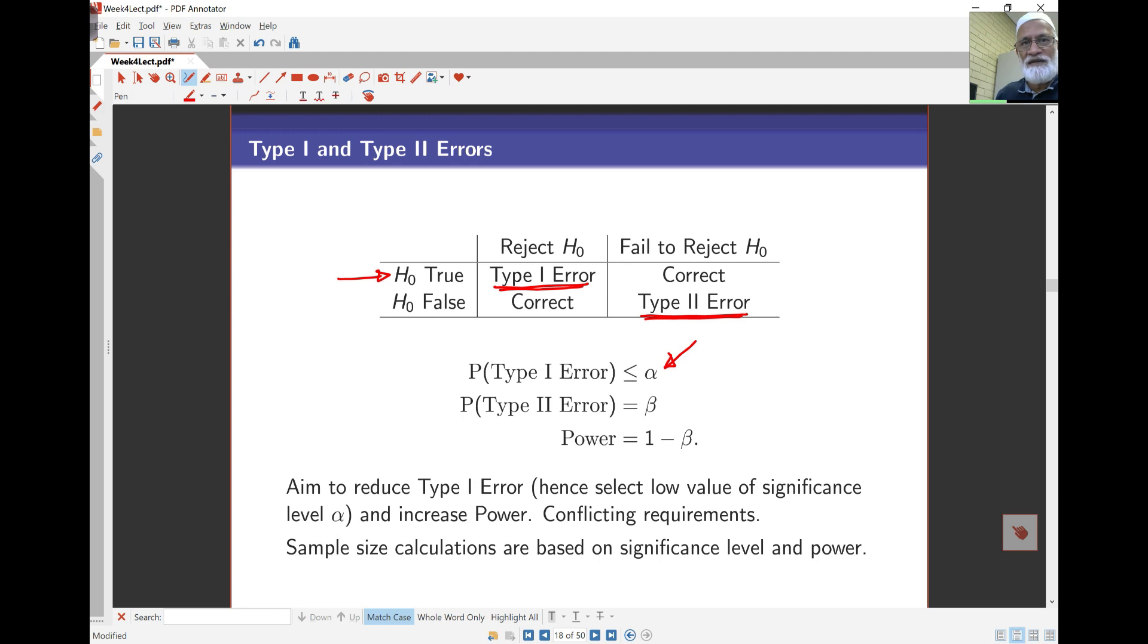The only way to maintain your Type I error and increase power is by increasing sample size. Increasing sample size has a cost. It's not always easy to find or recruit a large sample, and there are costs involved.